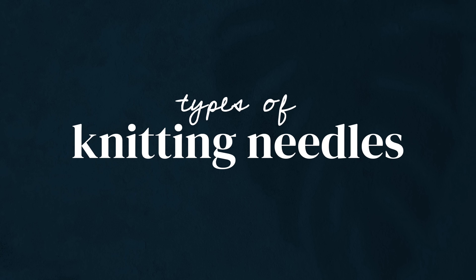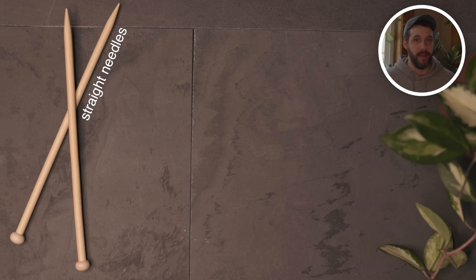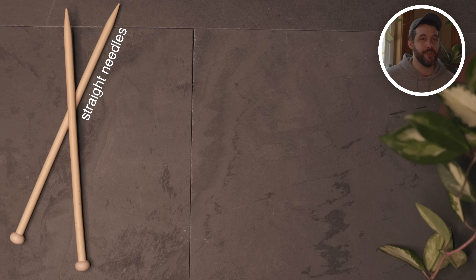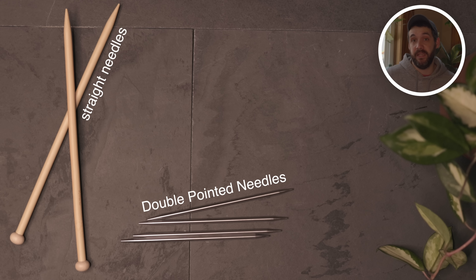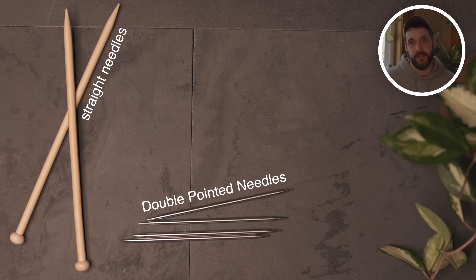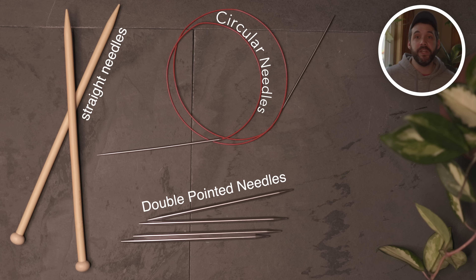Next, we'll talk about types of needles. Your basic needles are straight needles — those are just the needles you picture when you think of knitting, like if you're watching a cartoon with a character knitting. You'll also often see DPNs or double pointed needles, which are very similar to straight needles and are used to knit small circumferences in the round. After that, you'll see circular needles, which are needles attached to a cable that holds your stitches in between the needle tips.